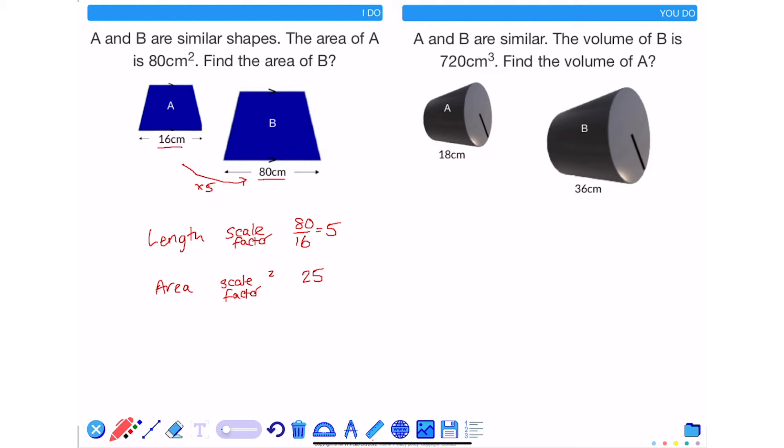So if I know that the area of shape A is 80 and the area has a scale factor from A to B of multiplied by 25, I multiply 80 by 25 and I get 2000 centimeters squared. This is the area of B.